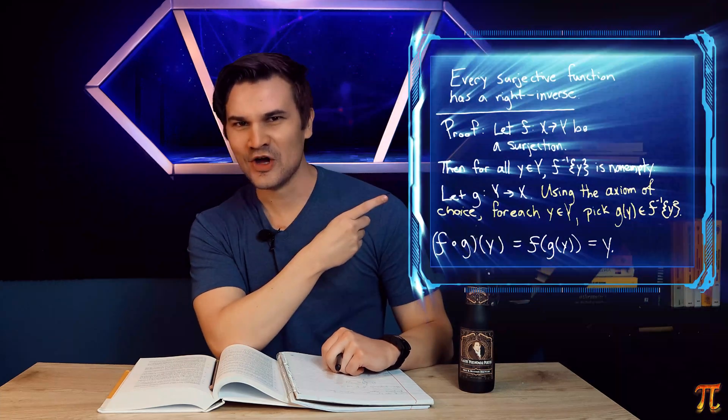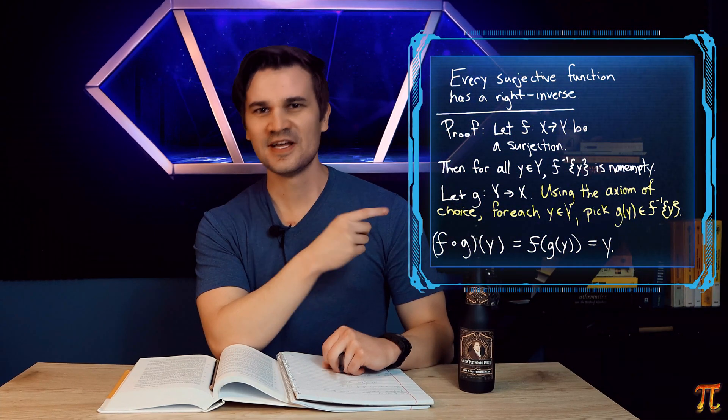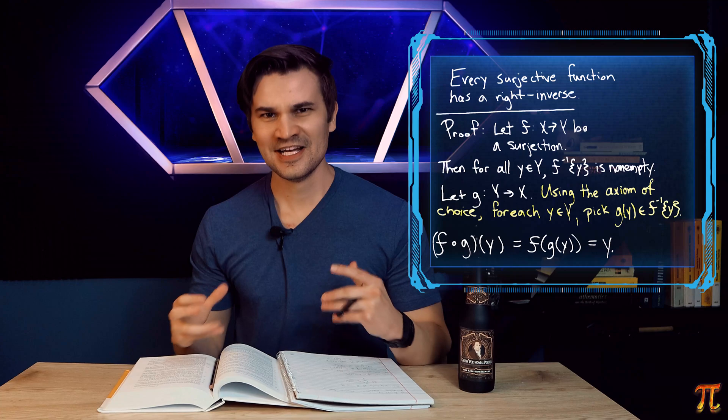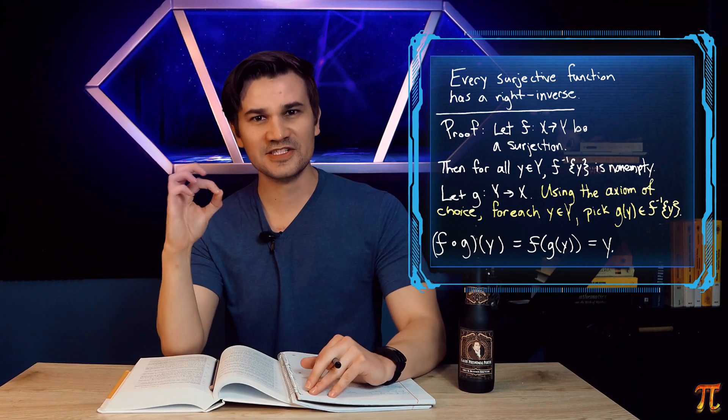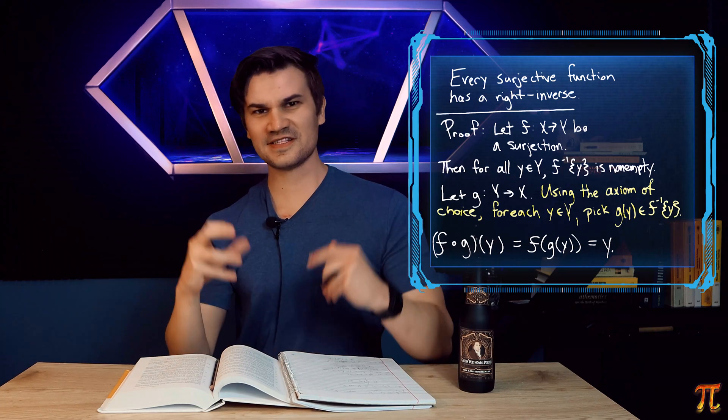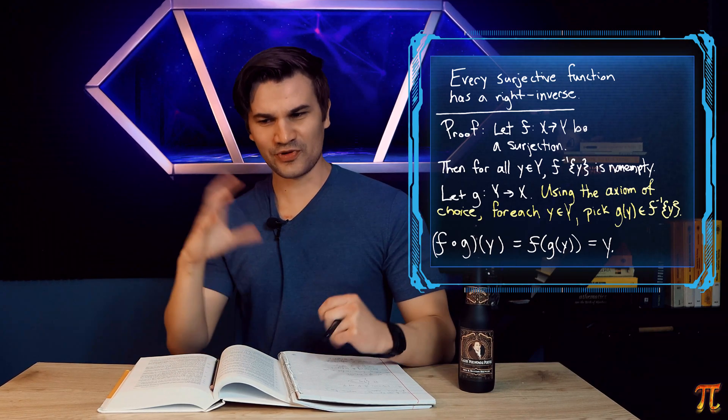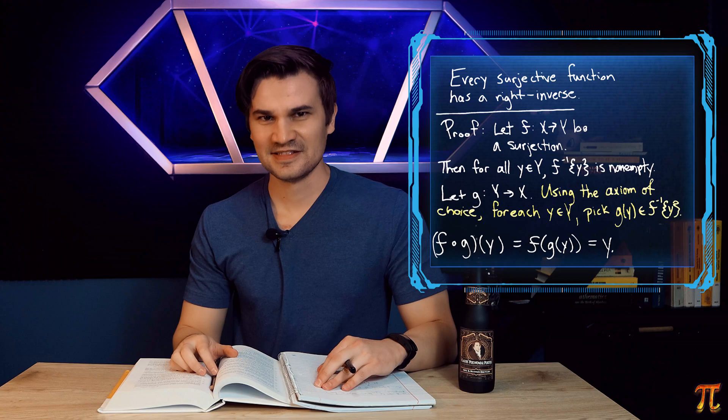Now, see, at this stage here, we have to use the axiom of choice. y was an arbitrary set, so it may be an infinite set. And so there are infinitely many preimages to consider. Since the function isn't necessarily injective, the preimages need not be singleton sets.